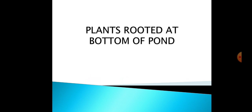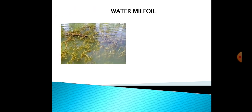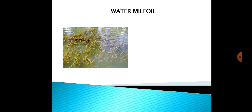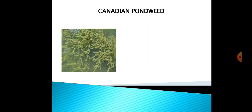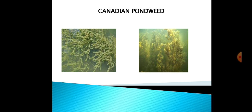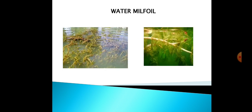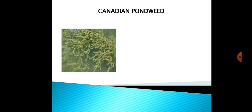The next category is plants rooted at the bottom of the pond water. The first example is water milfoil — its roots are at the bottom of the pond. The second example is Canadian pondweed. Both water milfoil and Canadian pondweed are plants whose roots are fixed at the bottom of the pond water.